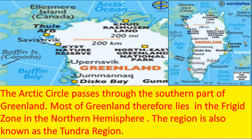The Arctic Circle passes through the southern part of Greenland. As you can see in the map, here is the Arctic Circle and here is the southern part of Greenland. So, most of Greenland lies in the frigid zone in the northern hemisphere. The region is also known as the Tundra region.